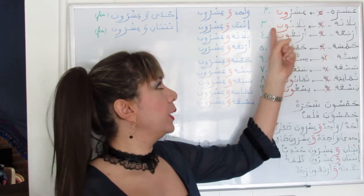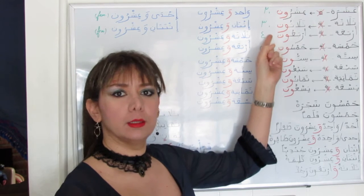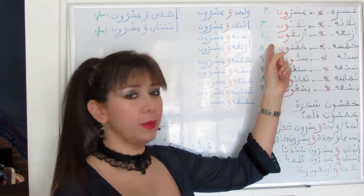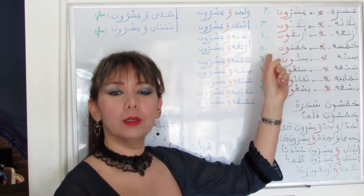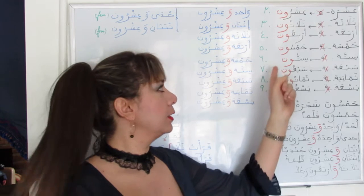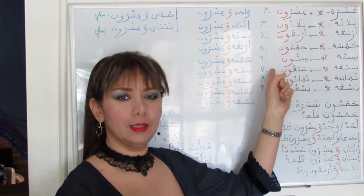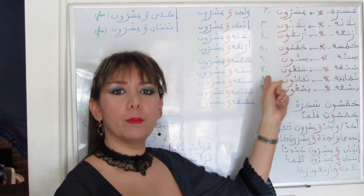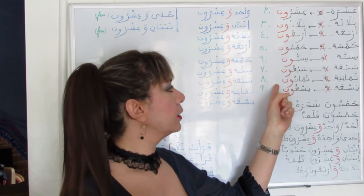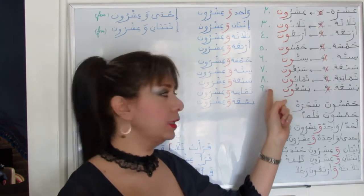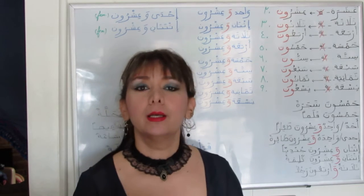So we will have: ثلاثون (thirty), أربعون (forty), خمسون (fifty), ستون (sixty), سبعون (seventy), ثمانون (eighty), تسعون (ninety).